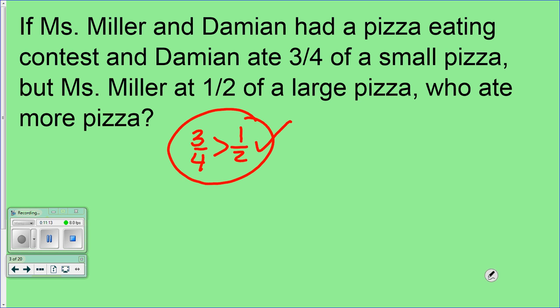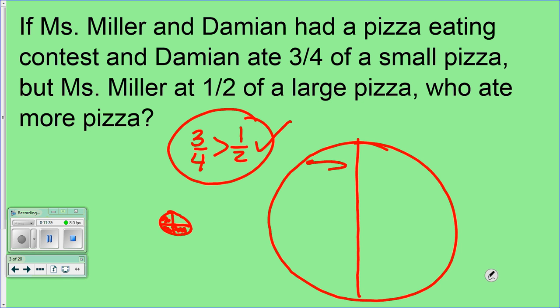So if you said Ms. Miller ate more pizza, why? Because it says that Damien had a smaller pizza and you had a larger pizza. So here's Damien's size pizza, here's his 3/4. And here's Ms. Miller's size pizza. Who ate more? Ms. Miller. Ms. Miller, because it's bigger. She had a bigger portion.